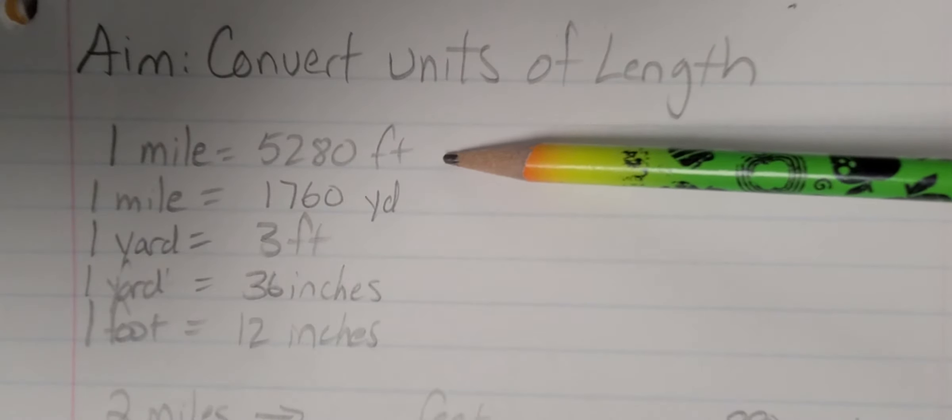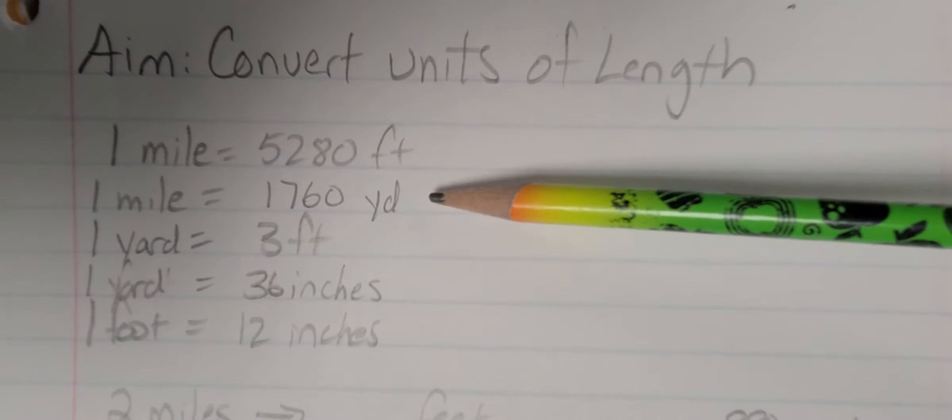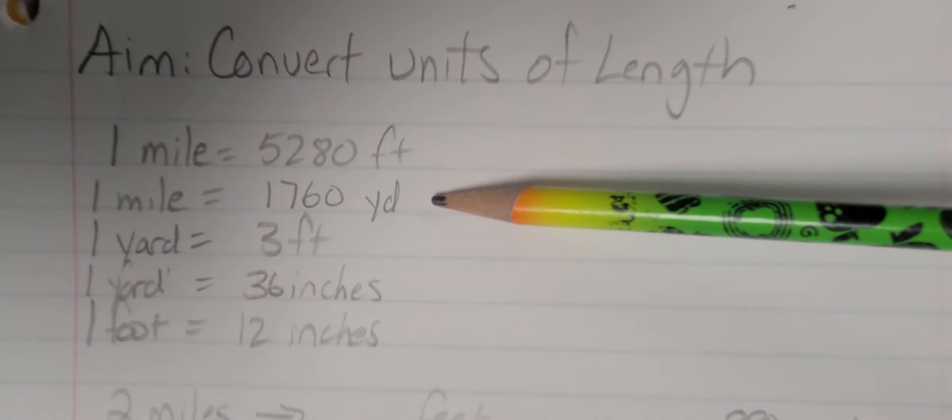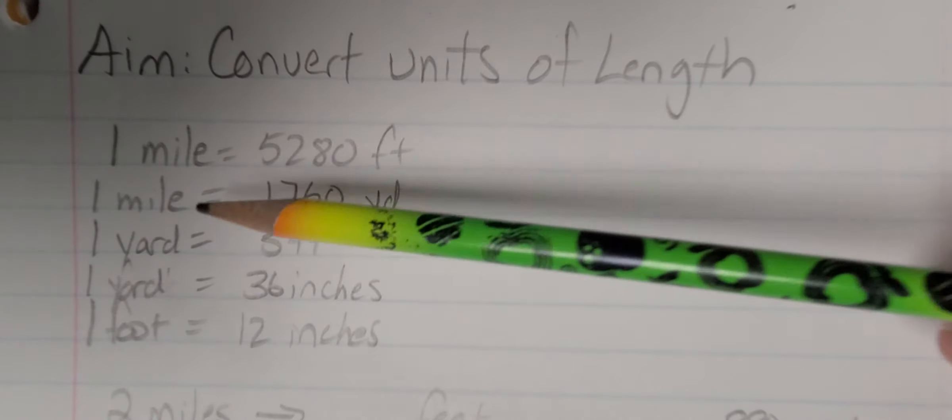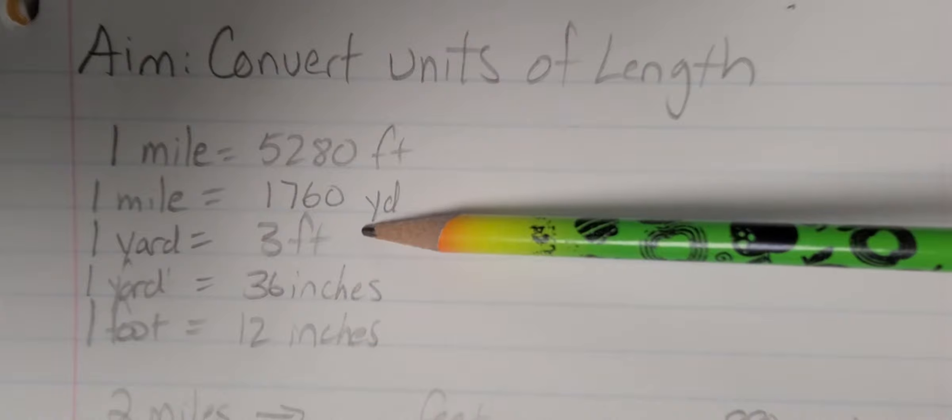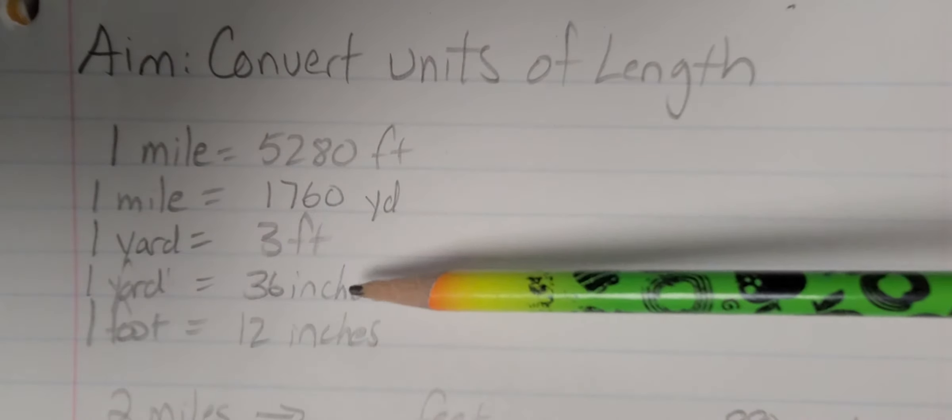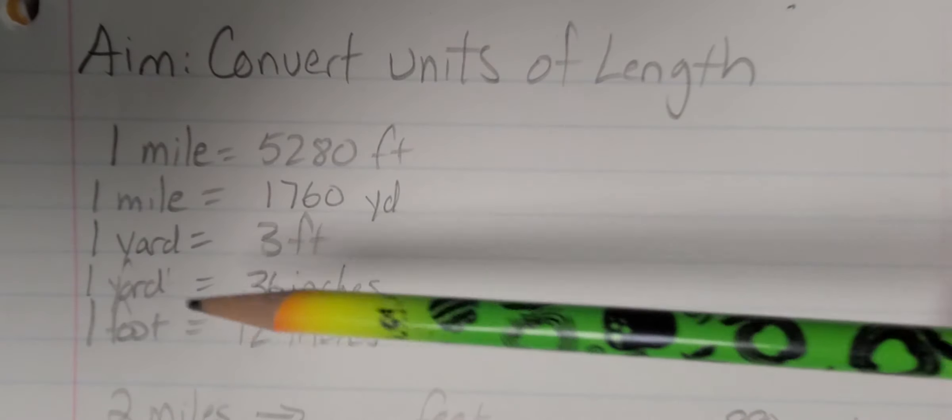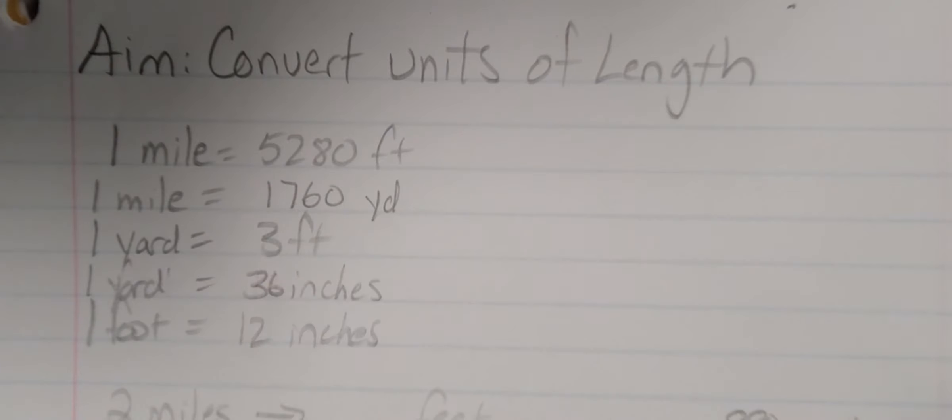A mile is 5,280 feet. A mile is also 1,760 yards. One yard is 3 feet. One yard is also 36 inches, and as you already all know, I'm sure, 1 foot equals 12 inches.